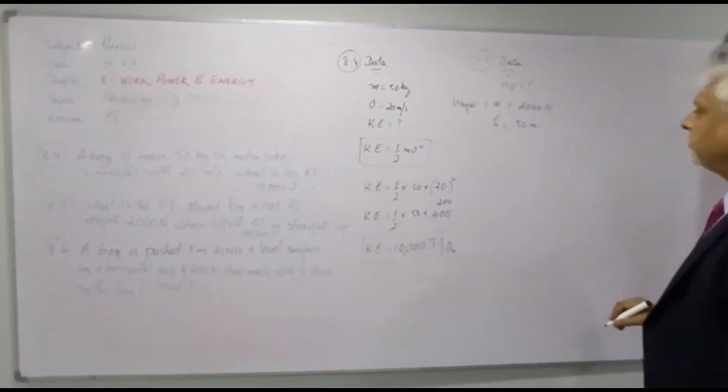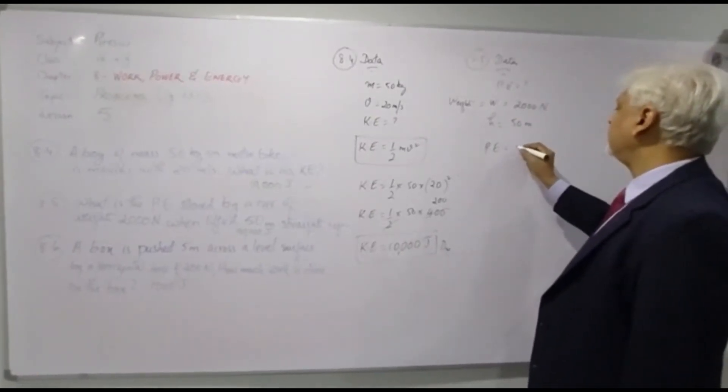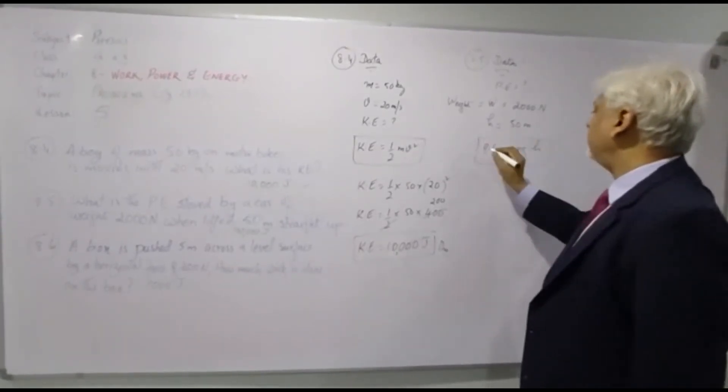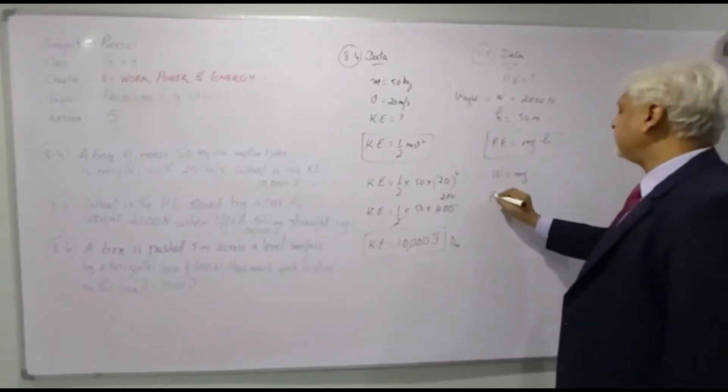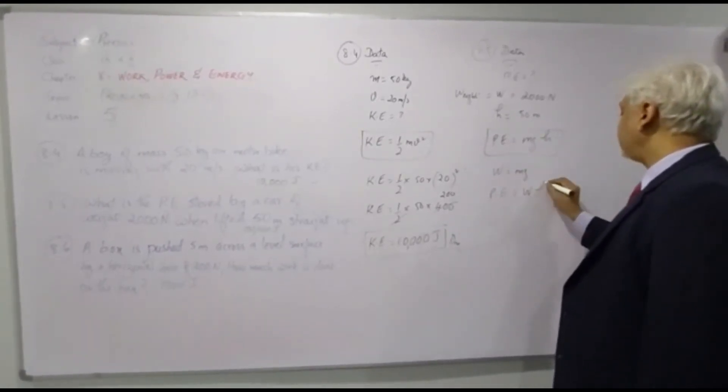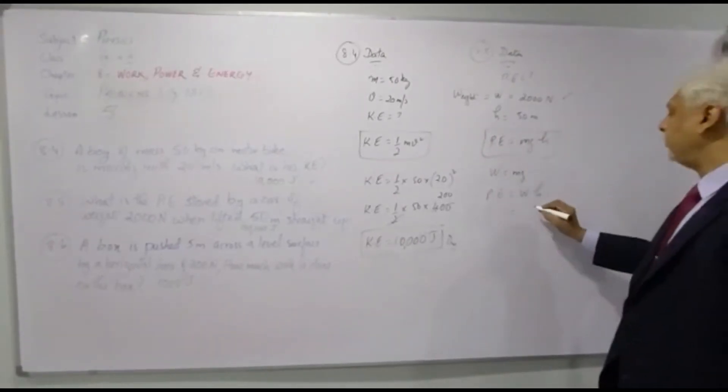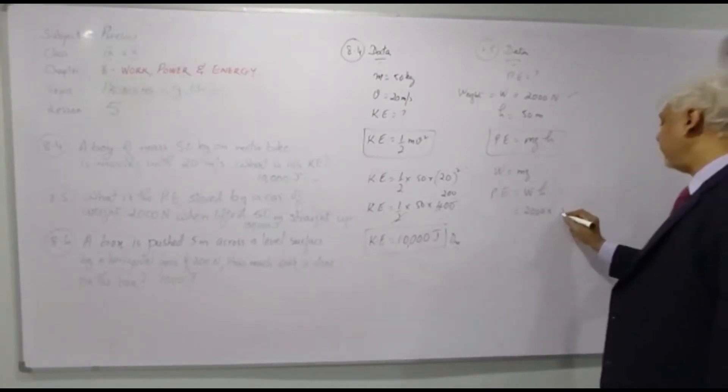So now you know the potential energy, I did derive this in my previous lesson as well, is equals to mgh. Now weight you know is equals to mg so I can replace this as Wh. And W is known, the weight is known to you as 2000 Newton times height is 50 meters.